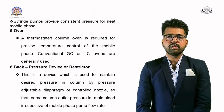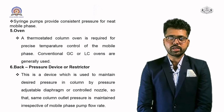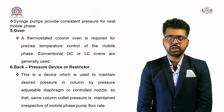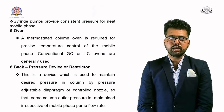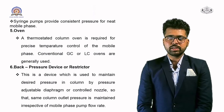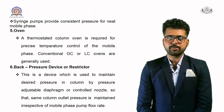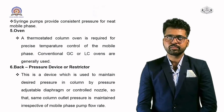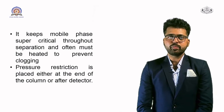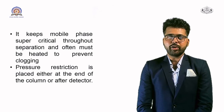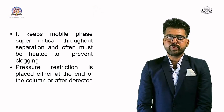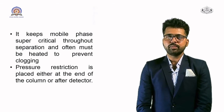Back pressure device or restrictor: This device is used to maintain the desired pressure in the column by a pressure-adjustable diaphragm or control nozzle, so that the same column outlet pressure is maintained irrespective of mobile phase pump flow rate. It keeps the mobile phase supercritical throughout separation and often must be heated to prevent clogging. Pressure restriction is placed either at the end of the column or after the detector.